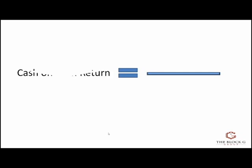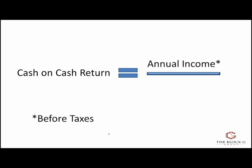Cash-on-cash return is basically equal to the amount of your annual income before taxes of the asset, divided by the amount invested. It's a percentage, because the annual income is going to be a smaller number than the amount invested — that's why it becomes a percentage. So that's the formula.